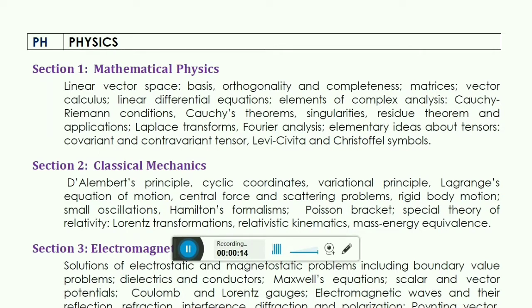The physics syllabus for GATE exam is divided into eight sections. The first section is mathematical physics, which includes linear vector spaces with basis, orthogonality and completeness conditions, and matrices. You will certainly get one or two questions from matrix. Then vector calculus and linear differential equations - one question must come from this part.